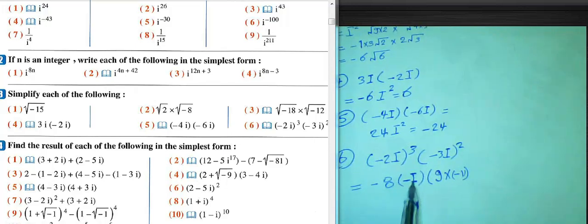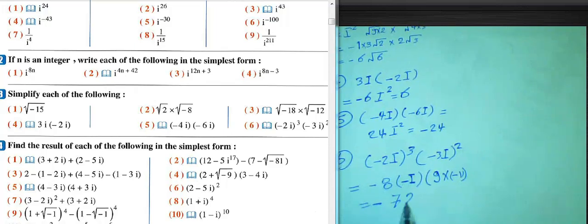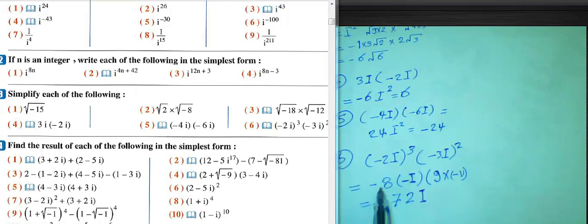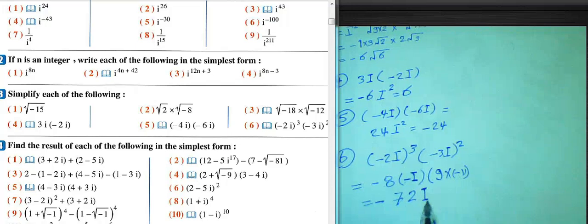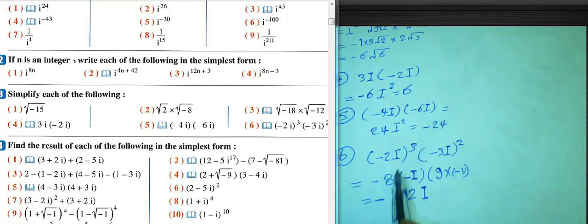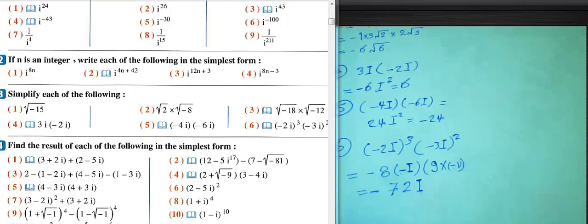Negative times negative times negative equals negative. 8 times 9 equals 72, and this gives us i. Again negative times negative gives negative. 8 times 9 equals 72, i times 1 equals i, because i^2 equals negative 1 and i^3 equals negative i. The result will be negative 72i.